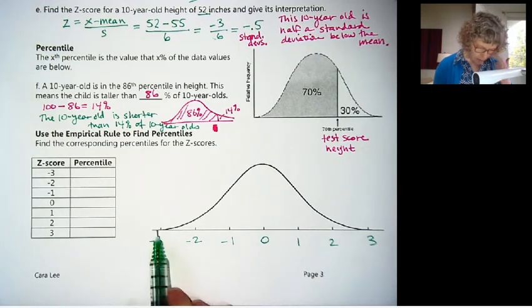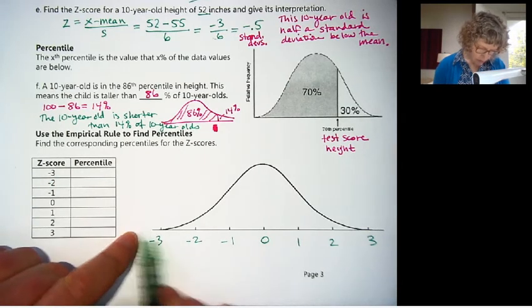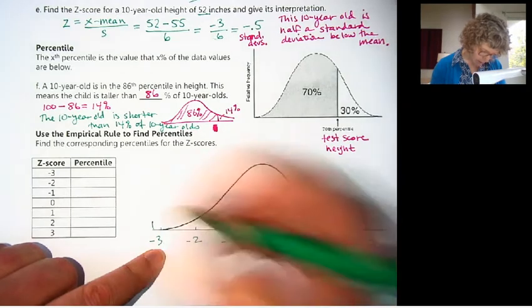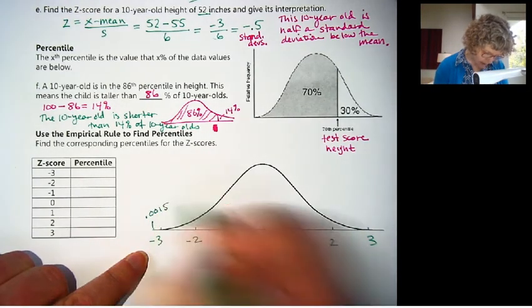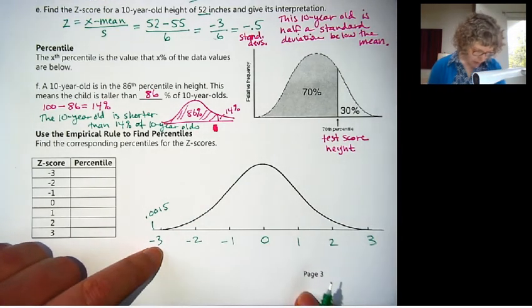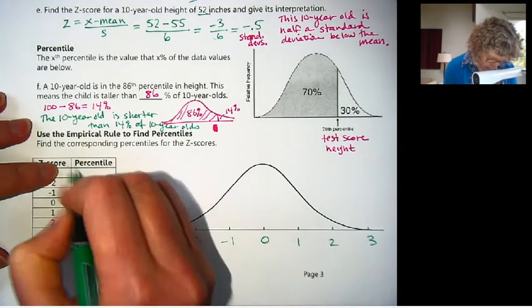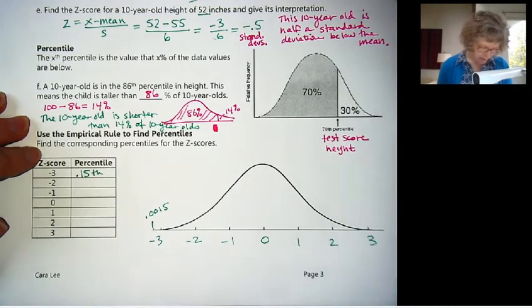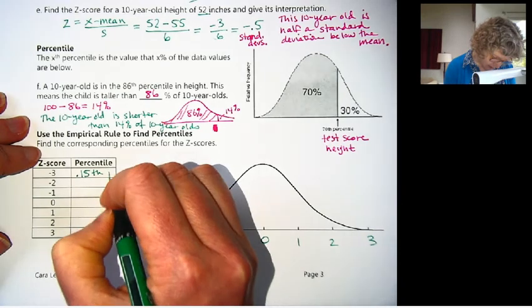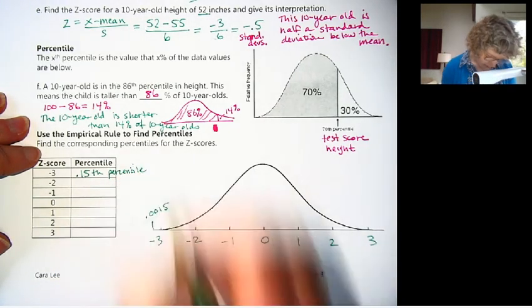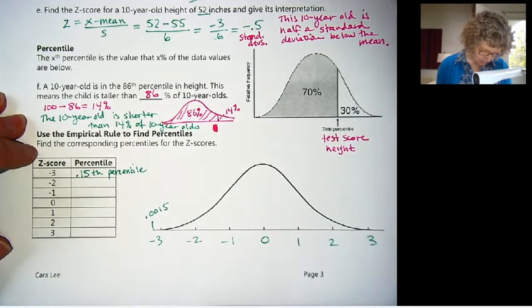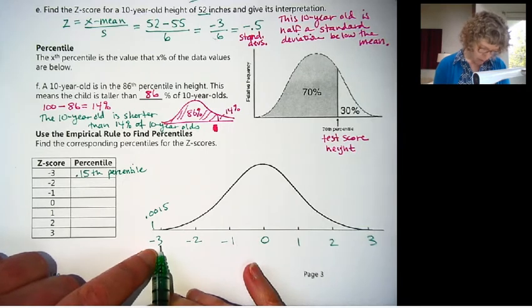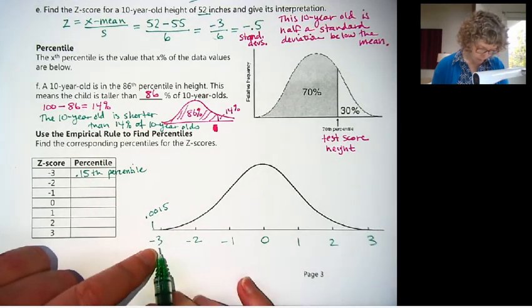So this would be 14%. So the question, so we could say the 10-year-old is shorter than 14% of 10-year-olds. So that's something to watch out for. Just be sure you're answering it in the correct direction of the graph. Okay, so that's what percentiles mean. And we're going to compare now, see how percentiles and z-scores relate to each other. I'm at the bottom here. It says, use the empirical rule to find percentiles. Okay, so we've got our z-scores. Our z-scores are standard scores. I'll write these in from our graph above. We know 0 is in the middle. And it goes up 1, 2, 3. And negative 1, negative 2, negative 3 to the left.